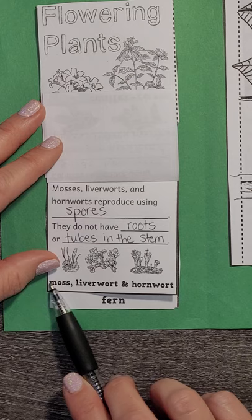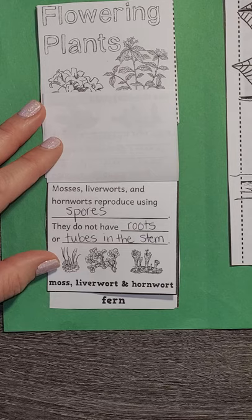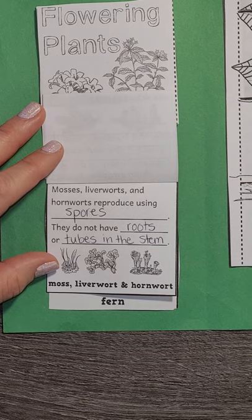Remember, moss is almost like a carpet-like plant. Liverwort got its name because the leaves look like the liver of an animal. And hornworts look like a horn. All of these plants are teeny tiny, reproduce with spores, and do not have roots or tubes in the stem.